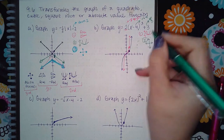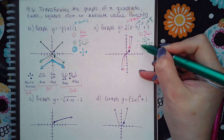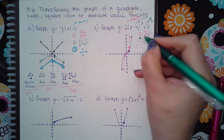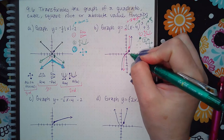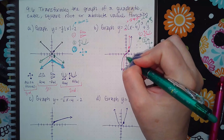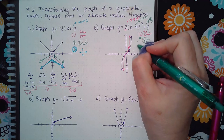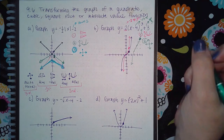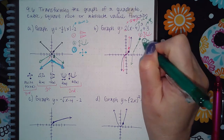It's much easier on the computer — you grab the point, move it one, two, three, four to the right and then up one, two, three, and the graph automatically shows up for you. You just shift it around and you're done.